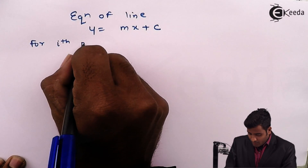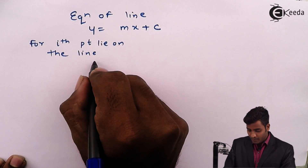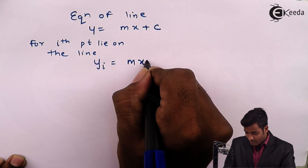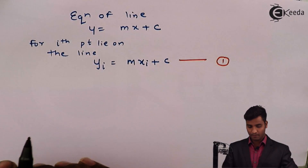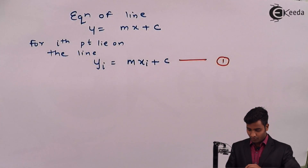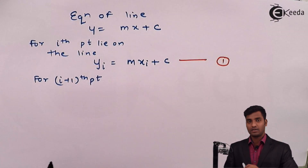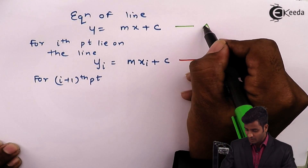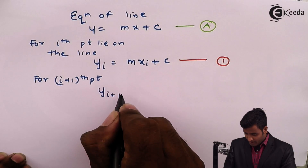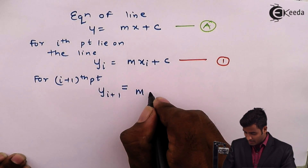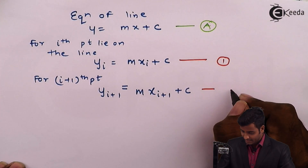For the ith point lying on the line, the equation will become yi = mxi + c. This is equation 1. For the i+1th point, the equation becomes yi+1 = mxi+1 + c. This is equation 2.